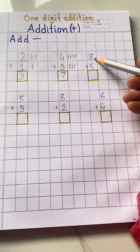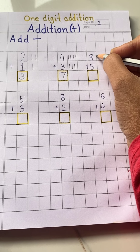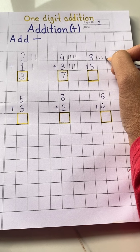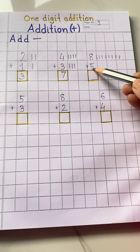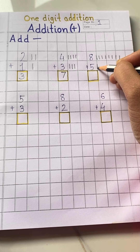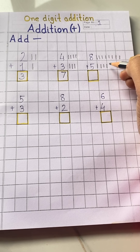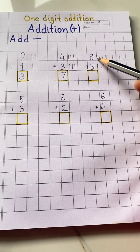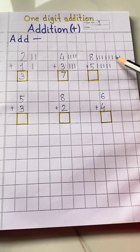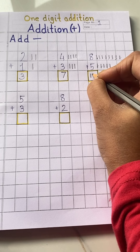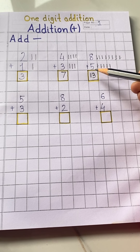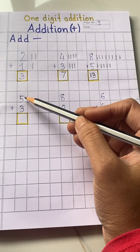Next number is eight — make eight lines: one, two, three, four, five, six, seven, eight. The number is five — make five lines: one, two, three, four, five. Now count all together: one, two, three, four, five, six, seven, eight, nine, ten, eleven, twelve, thirteen. Write here thirteen. Eight plus five is thirteen.